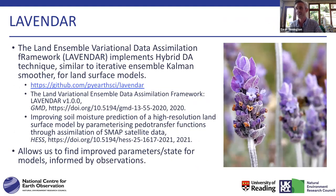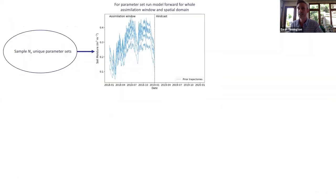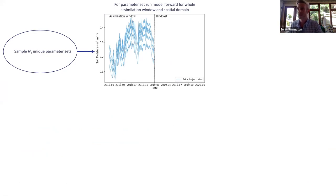We've developed this technique and called it LAVENDER — we had to give it a name. We've published this in Geoscientific Model Development, and we've also just had a paper come out in Hydrology and Earth System Sciences using this technique with SMAP data in the JULES land surface model. Looking at a schematic: we sample N unique parameter sets — in our experiments, an ensemble size of about 50 — and run the model forward for all those different parameter realizations.